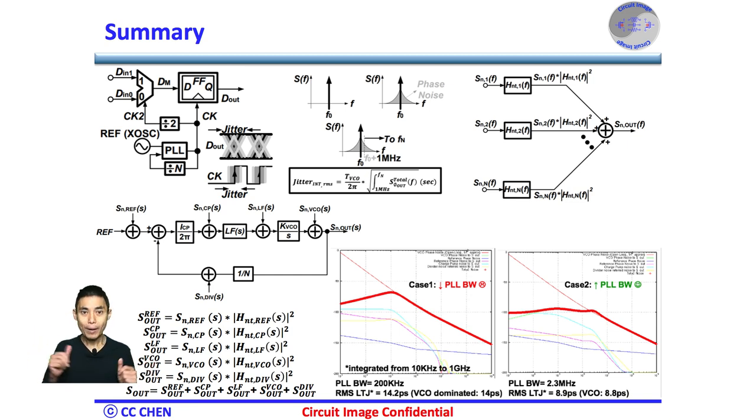But, each noise contribution of each noise source should be individual power spectral density times the square of the noise transfer function in magnitude. Therefore, we could increase or optimize the PLL bandwidth to reduce the VCO noise contribution elegantly and efficiently without increasing the VCO power.